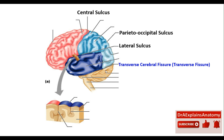The fissure between the cerebellum and the cerebrum is the transverse cerebral fissure, also called the transverse fissure. A fissure is a deep cut, whereas a sulcus is a superficial cut.